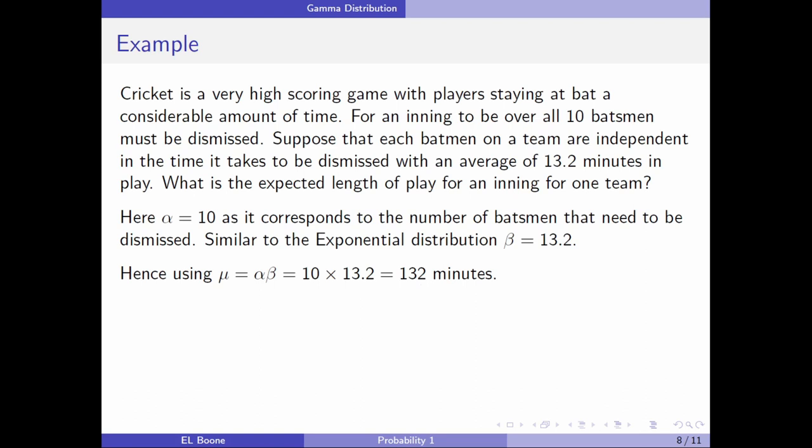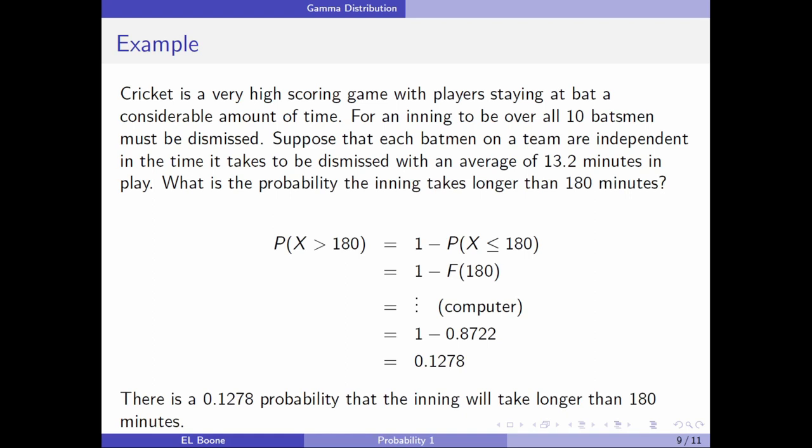Using this information, on average it will take alpha times beta, 132 minutes, to get all these batsmen out. That makes sense - ten people, on average 13.2 minutes each, comes out to about 132 minutes. But now we can use this to come up with probability.